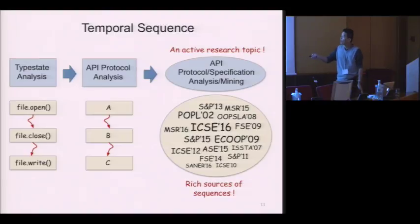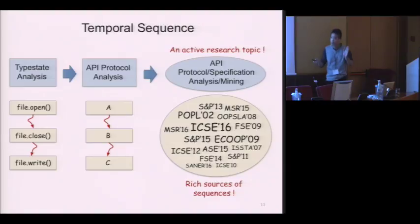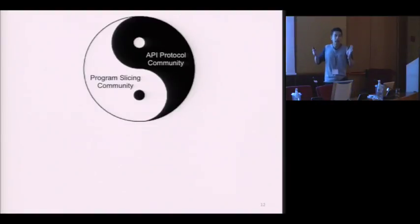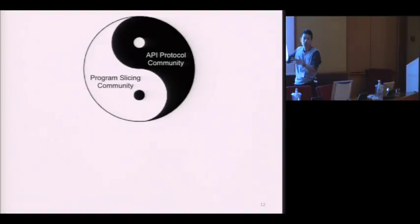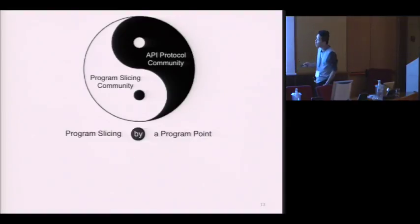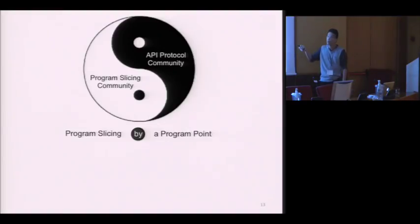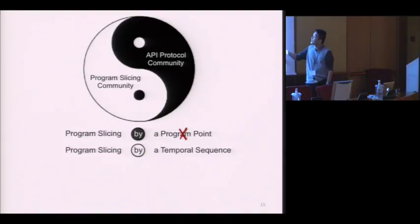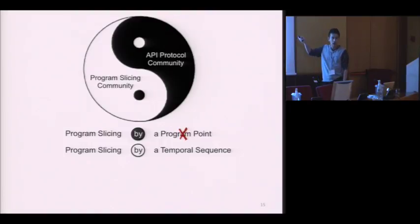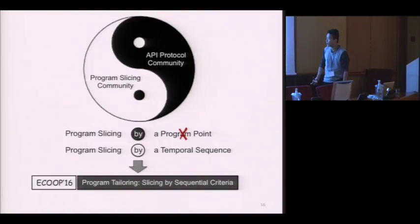That means we have rich sources of temporal sequences in the real world. Now we have a very interesting problem: what would happen if the program slicing community encounters the API protocol analysis community? Before, we sliced the program by the traditional criteria — a single program point. But what would happen if we sliced a program by temporal sequences, which can be generated by API protocol analysis? The answer is our paper: program tailoring — slicing by sequential criteria.